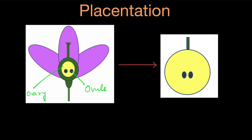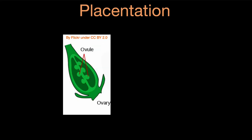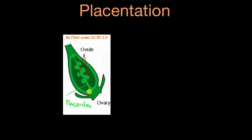So why is it called placentation? Let's take a look at the inside of an ovary in more detail. This whole thing is the ovary, and these right here are the ovules. You see these structures to which the ovules are attached — these structures are called the placenta. So the ovules are attached to the ovary via these connecting tissues called the placenta, and the way in which the ovules are attached is called placentation.